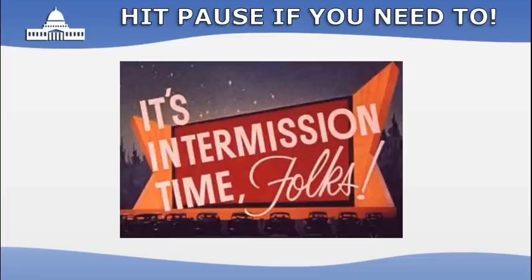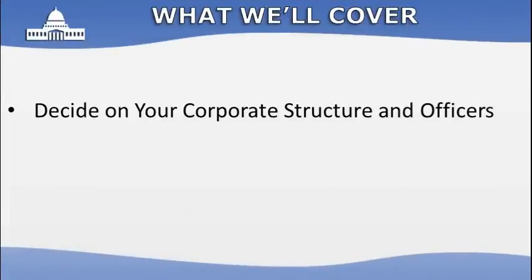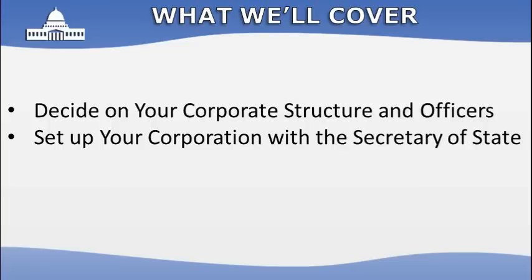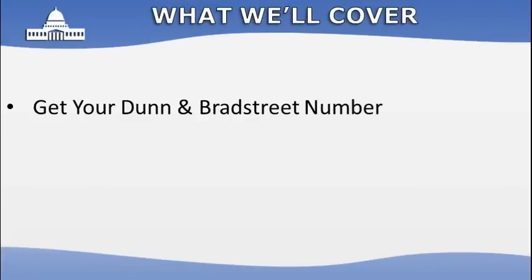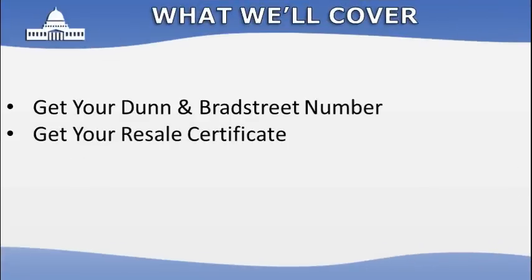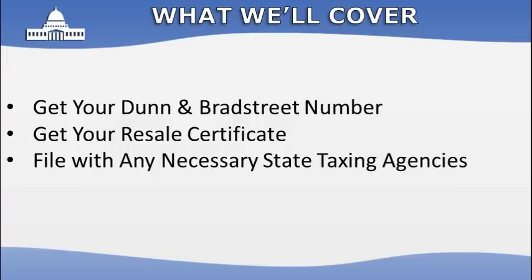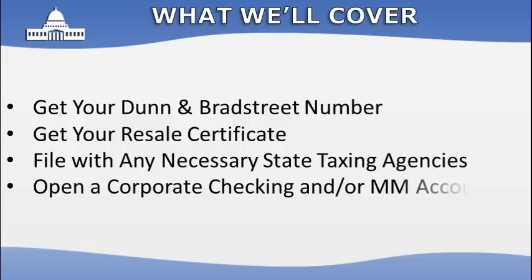Here's what we're going to cover in this video: deciding on your corporate structure and officers, setting up your corporation with the Secretary of State, ordering your corporate paperwork and seal, getting your federal ID number, getting your Dun & Bradstreet number, getting your resale certificate, filing with any necessary state taxing agencies, and opening a corporate checking or money market account.